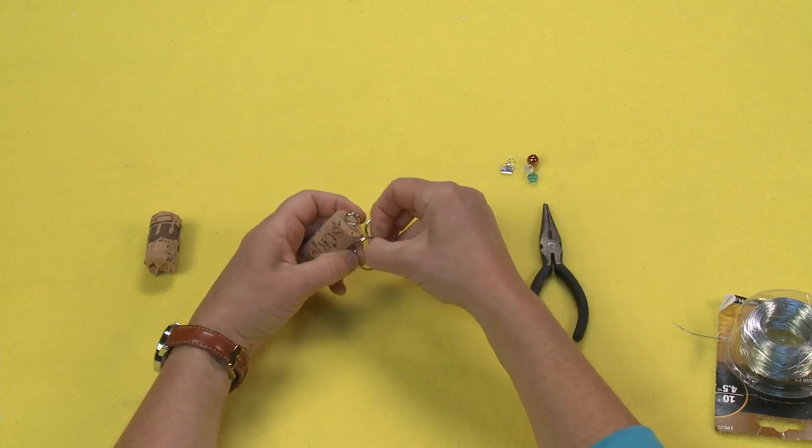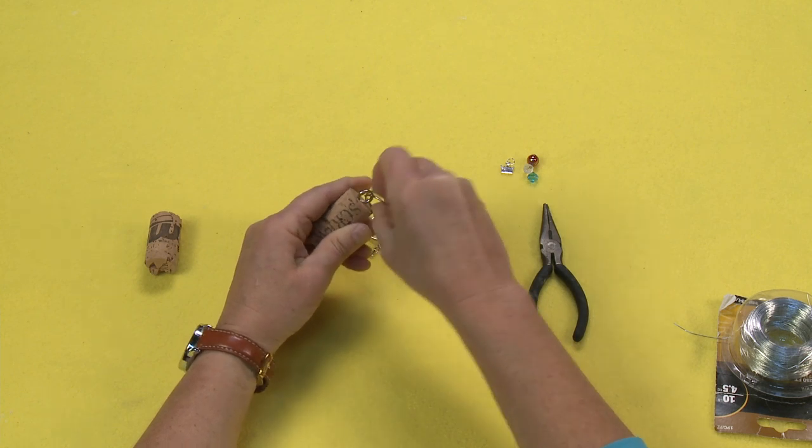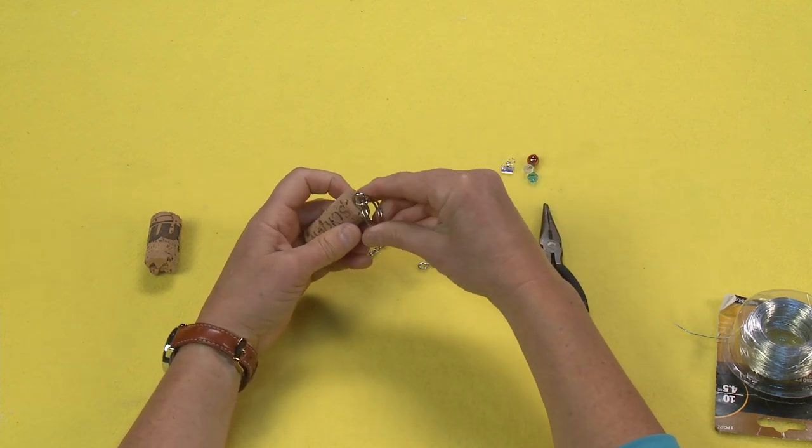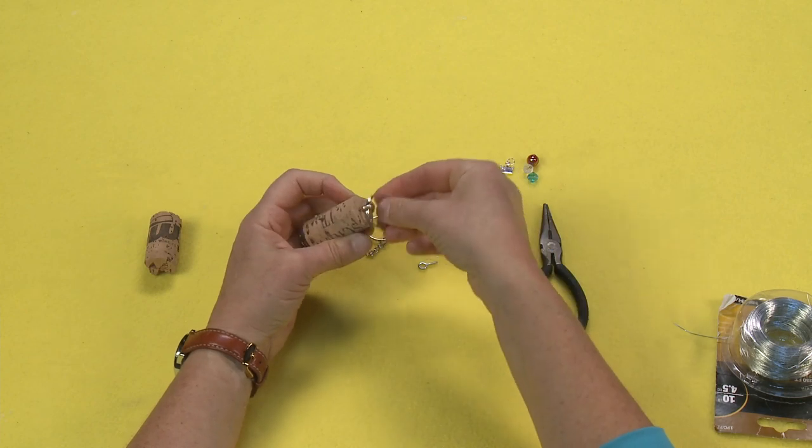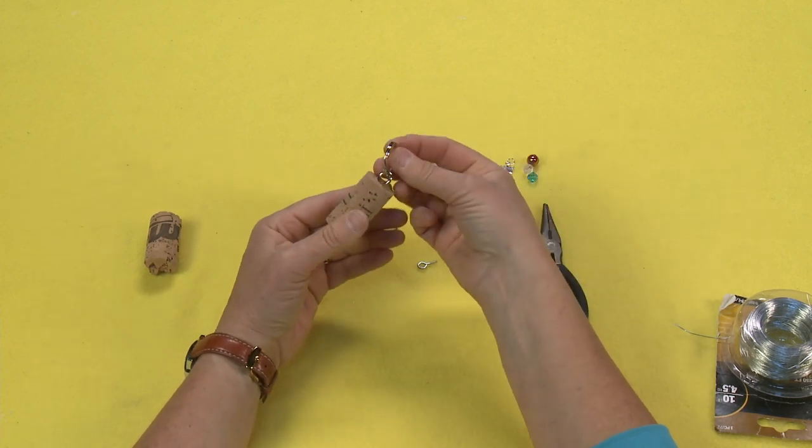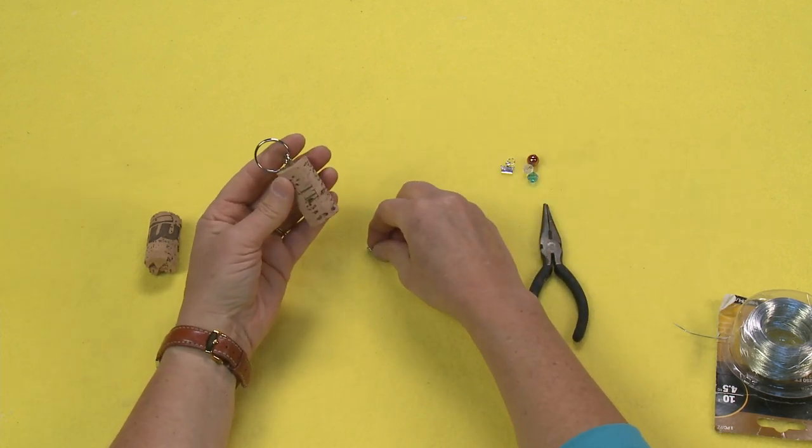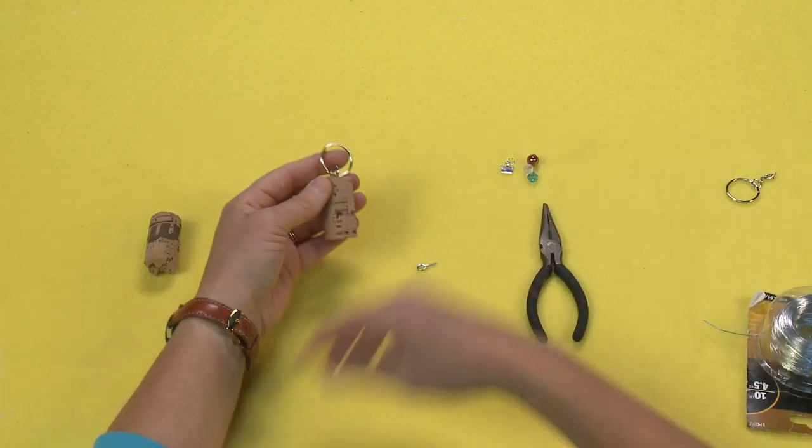Now I'm going to attach my keyring. Just open it up and slide it through. And there you have your keychain. You can stop right there if you want. I'm going to put that off to the side.